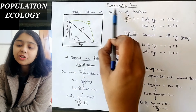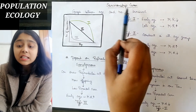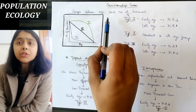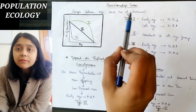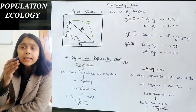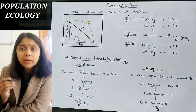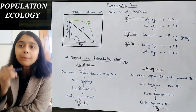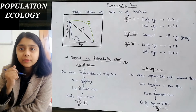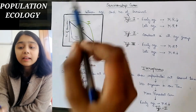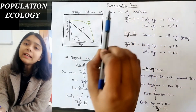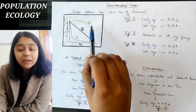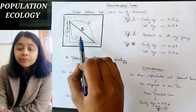Now come to the survivorship curve. A survivorship curve is a graph between age and number of survivors in the population. There are three types of survivorship curve: first, second, and third.